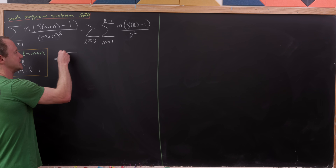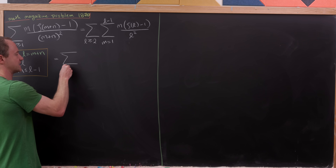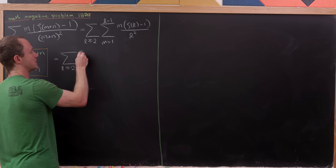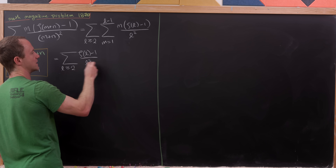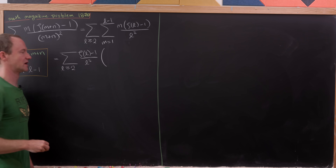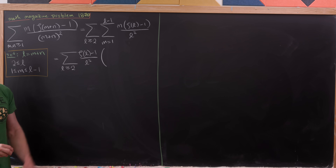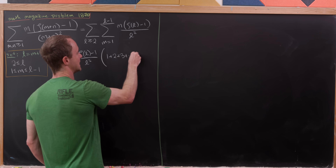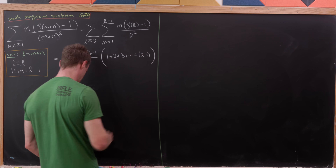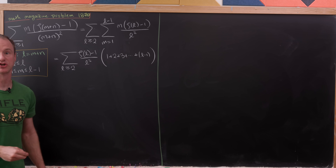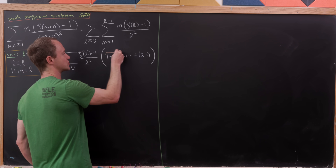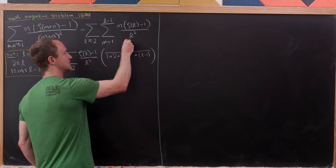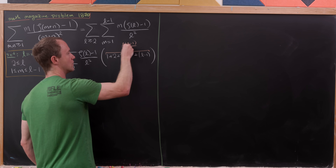So we can factor it out of the inner sum, giving us the sum as l is bigger than or equal to 2 of zeta of l minus 1 all over l squared, times the inner sum as m goes from 1 to l minus 1 of simply m — that is, 1 plus 2 plus 3 ending at l minus 1. That's a triangular number, specifically the (l minus 1)th triangular number.